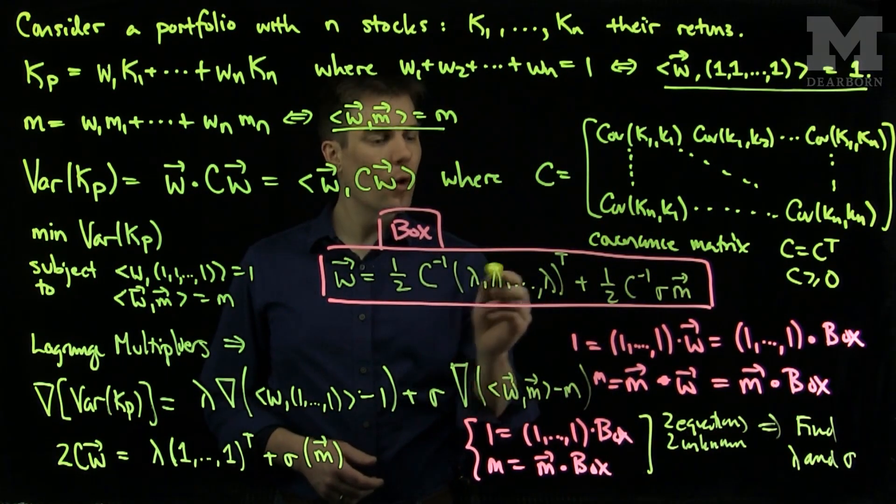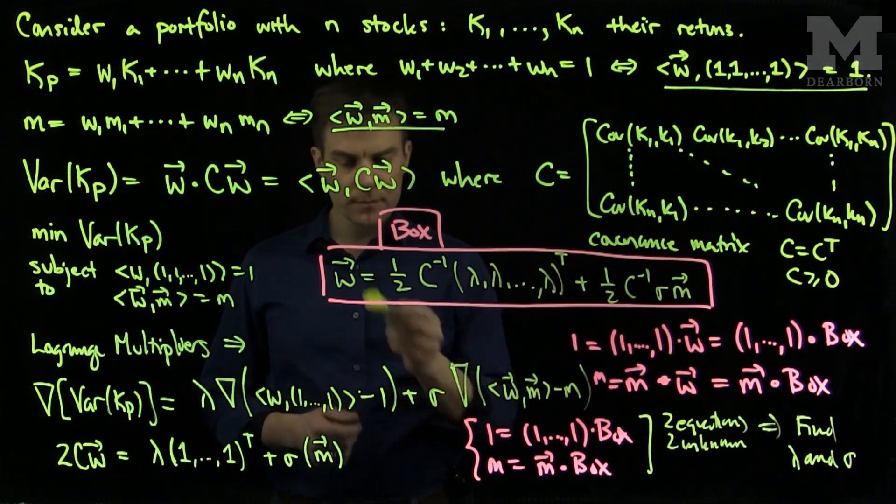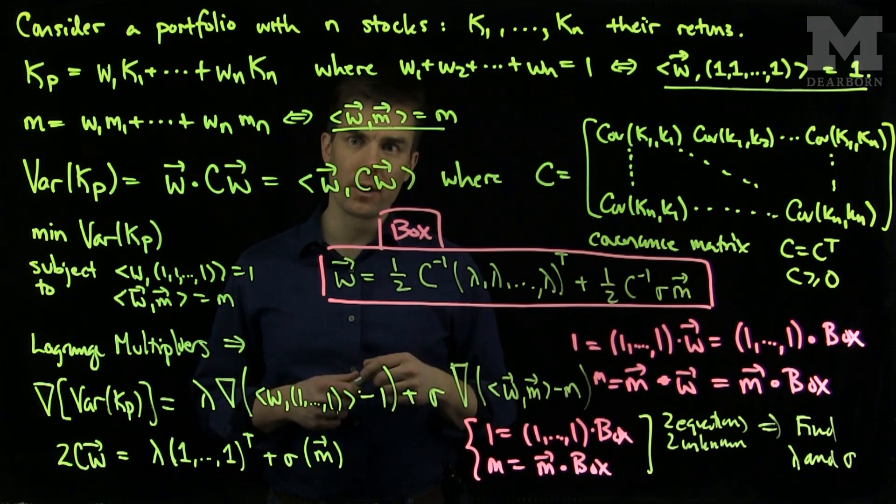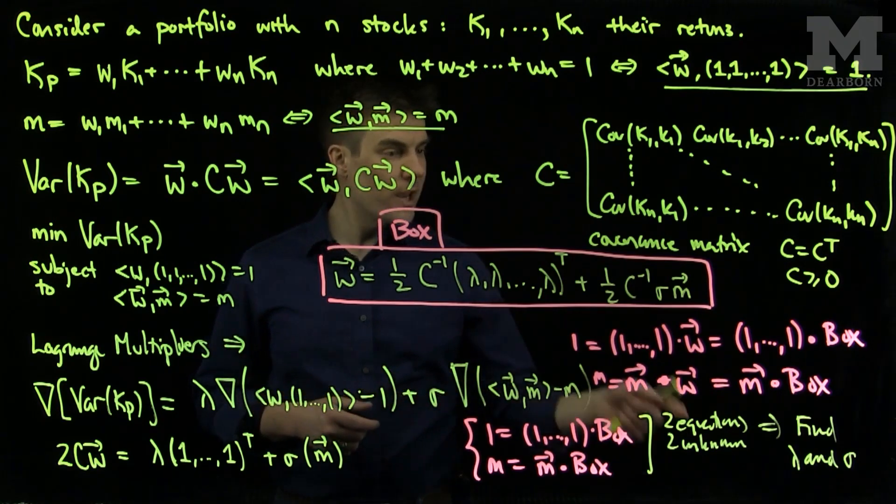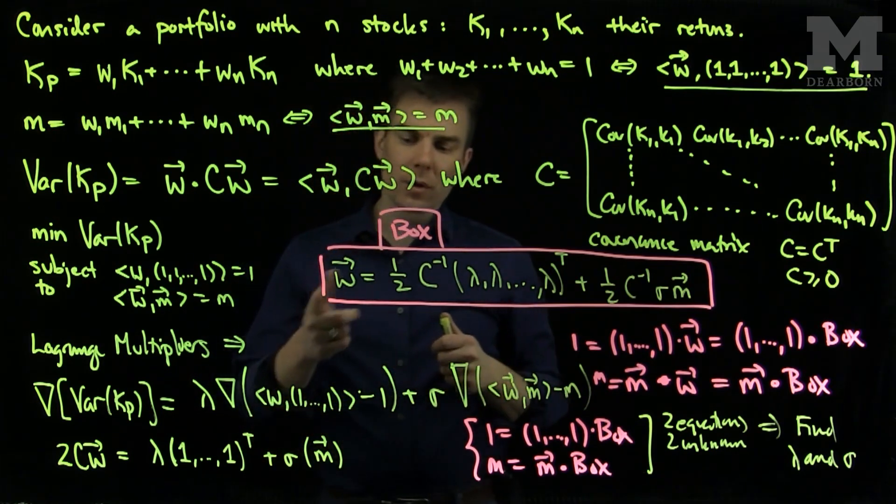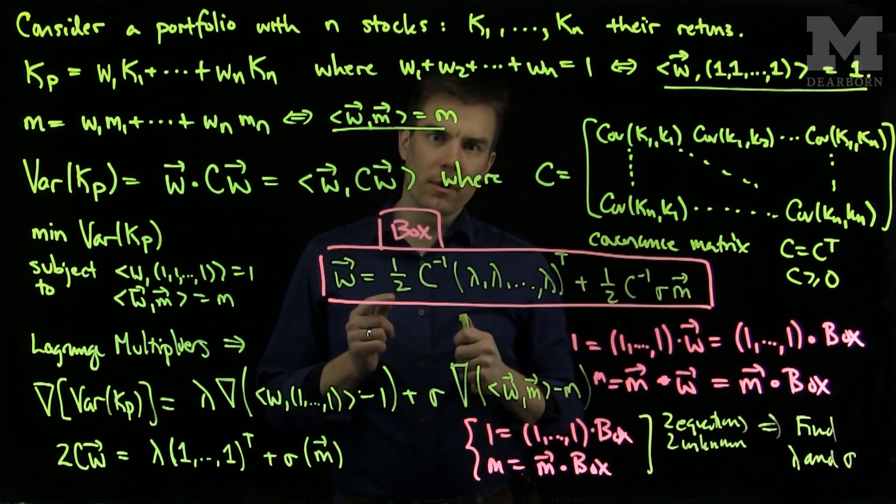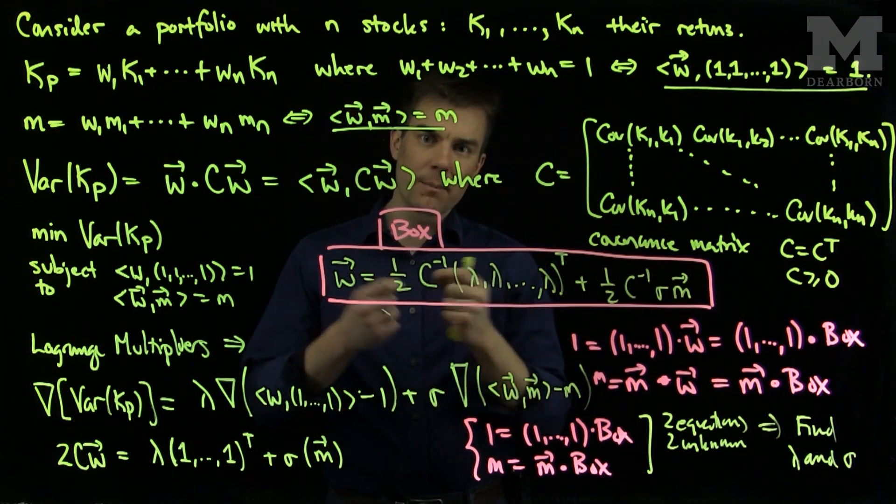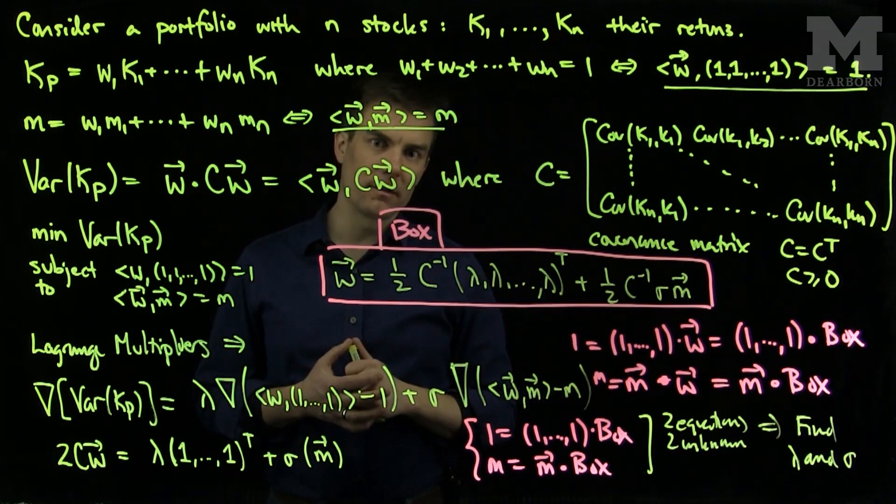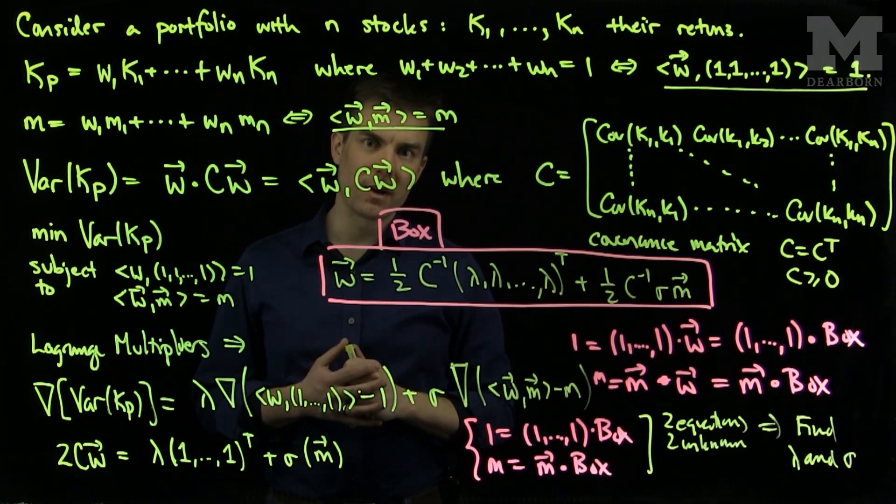Once we find lambda and sigma, we plug them back into the boxed equation, and we have a formula for the weight vector w, which tells me the weight vector for the minimum variance portfolio given this constraint. We can notice that this formula will only depend on the parameter m, which shows us that the minimum variance portfolio can be parameterized by the mean, which gives us a way of computing the efficient frontier of a collection of portfolios. Thank you very much.